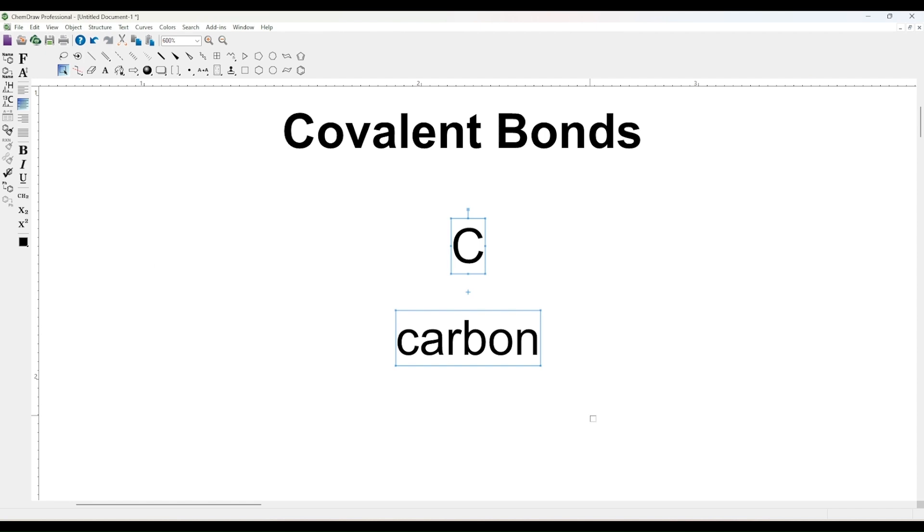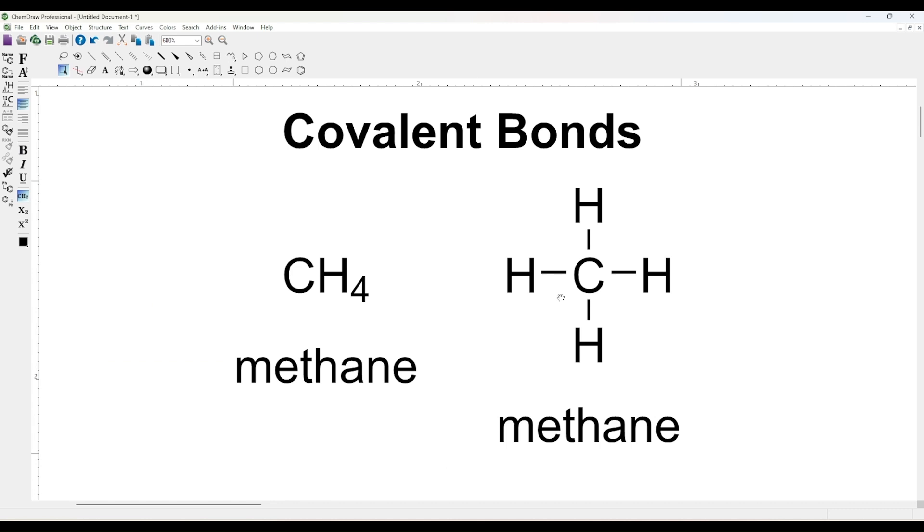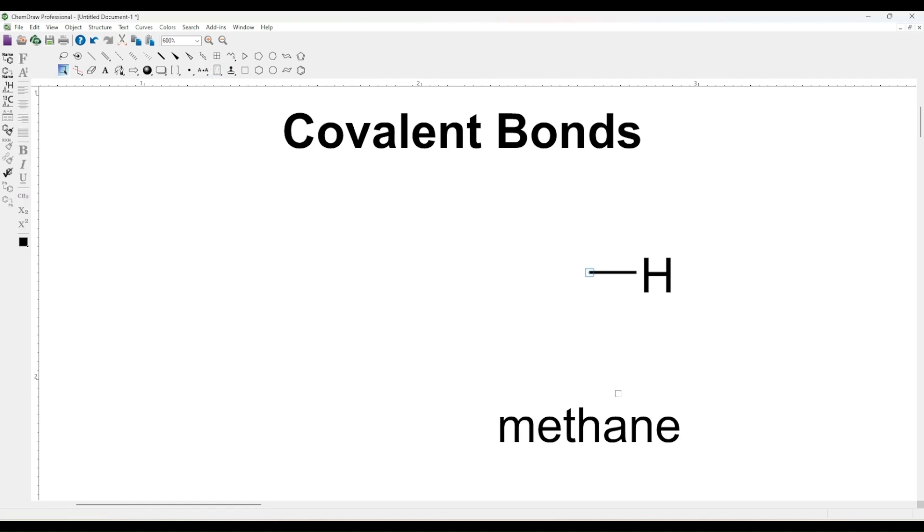Carbon can form covalent bonds with four other atoms, while hydrogen forms one covalent bond. Oxygen forms two, and nitrogen forms three.